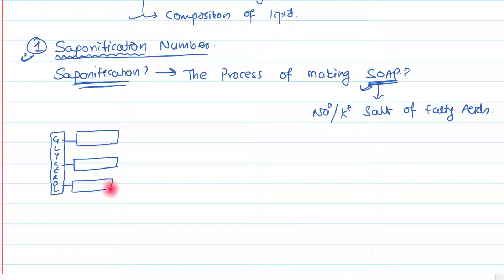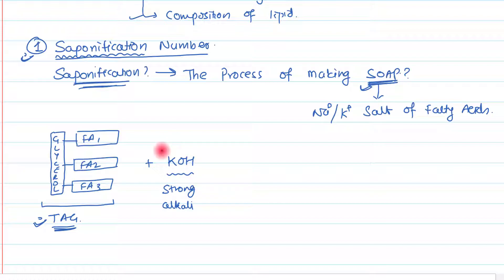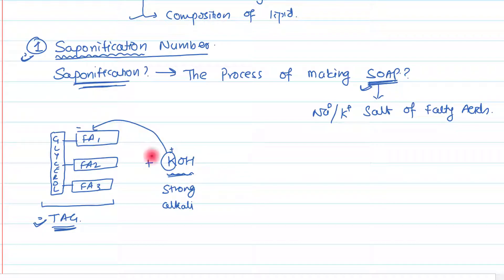In the case of triacylglycerol, all three carbons are attached with fatty acids. These different fatty acids may be similar or different — fatty acid one, fatty acid two, and fatty acid three. When you treat this triacylglycerol with potassium hydroxide, a strong alkali, the potassium will bind with the fatty acid. Potassium carries a positive charge and the fatty acid carries a negative charge, so this OH⁻ will simply replace the fatty acid.